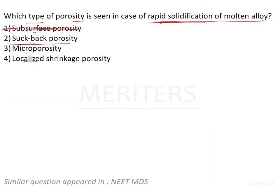So which type of porosity is seen in rapid solidification of the molten alloy? Suck back porosity and localized shrinkage are because of sprue, not because of solidification of the molten alloy directly. So the most appropriate answer is microporosity, that is option number three.